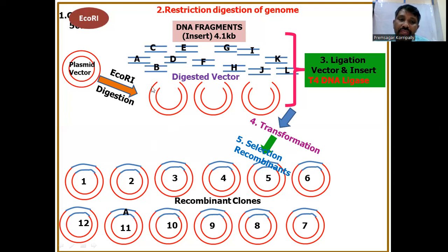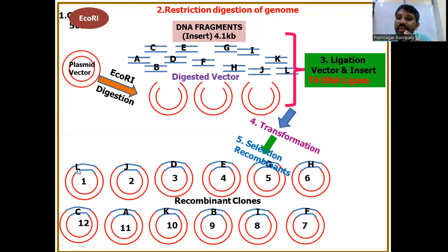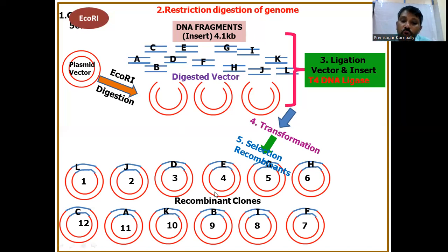Clone 9 has fragment B, clone 12 has fragment C, clone 3 has fragment D, clone 4 has fragment E, clone 7 has fragment F, clone 5 has fragment G, clone 6 has fragment H, clone 8 has fragment I, clone 2 has fragment J, clone 10 has fragment K, and clone 1 has fragment L. So the total DNA fragments of the genome are randomly cloned — the entire genome is fragmented and cloned into a suitable vector.